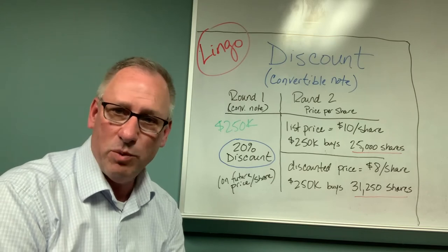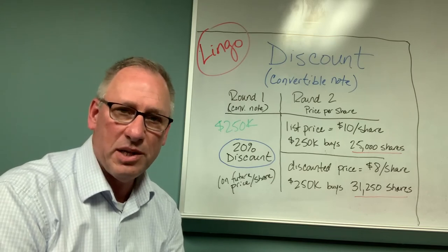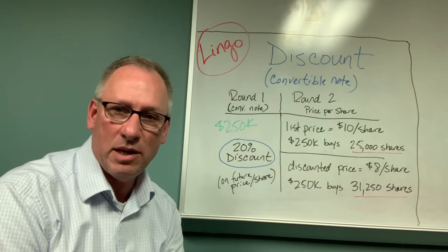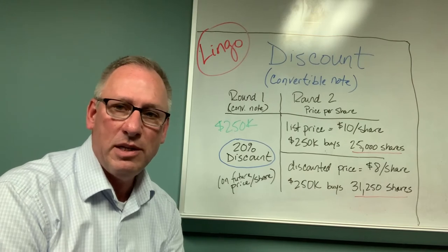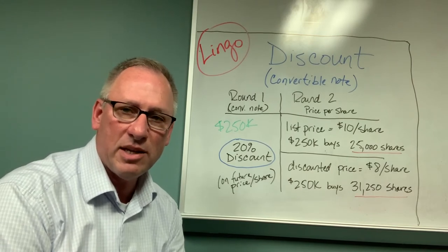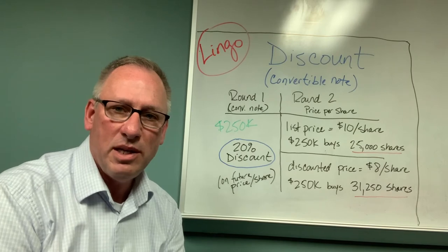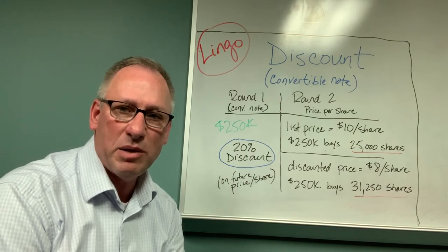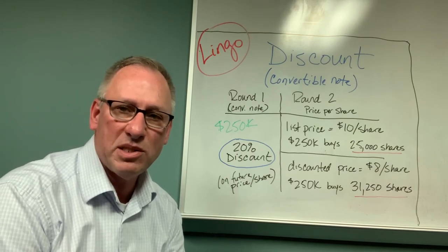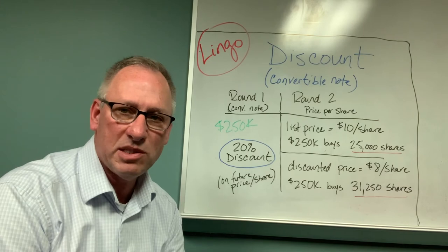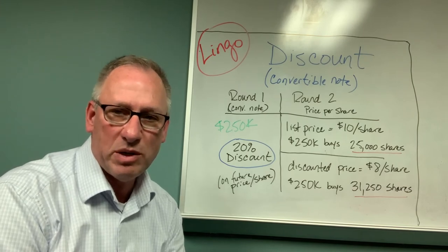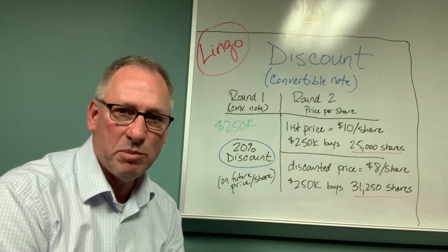And what that discount does is essentially a price reduction of the future price — the price that's determined in that next round. And so that might be in the range of zero to 35% discount, and 20% is a pretty typical one.